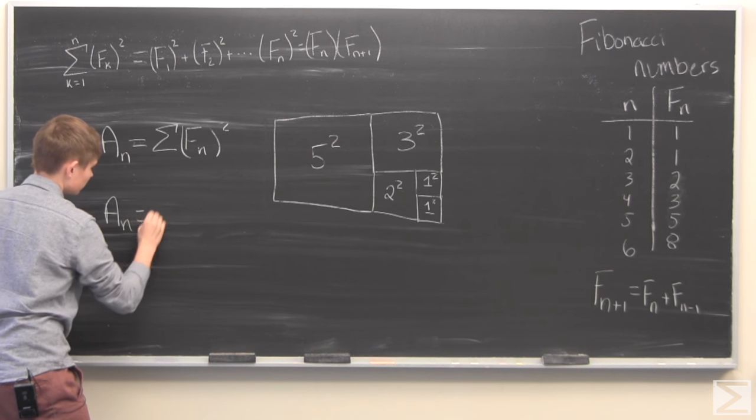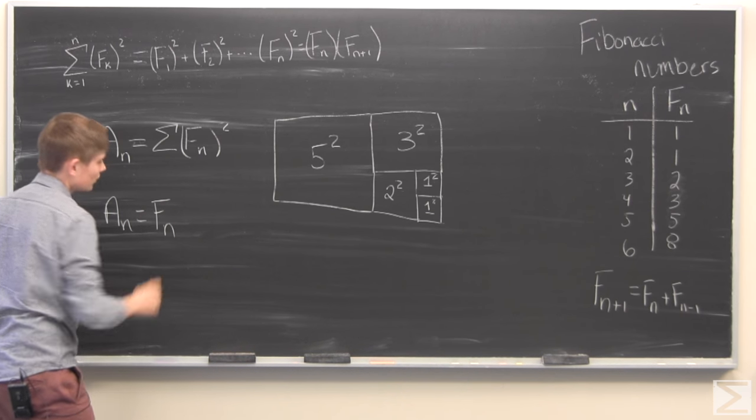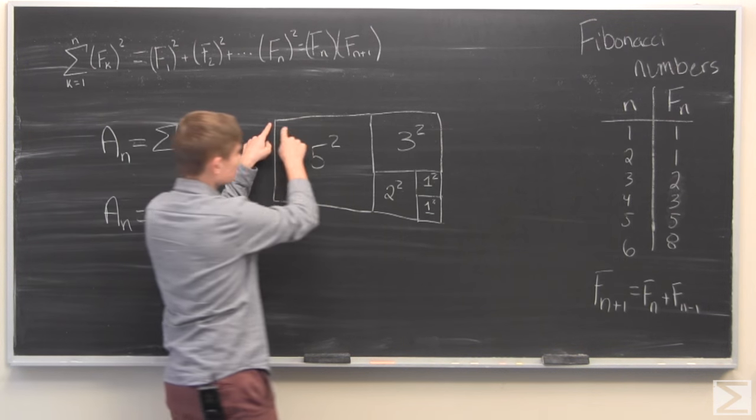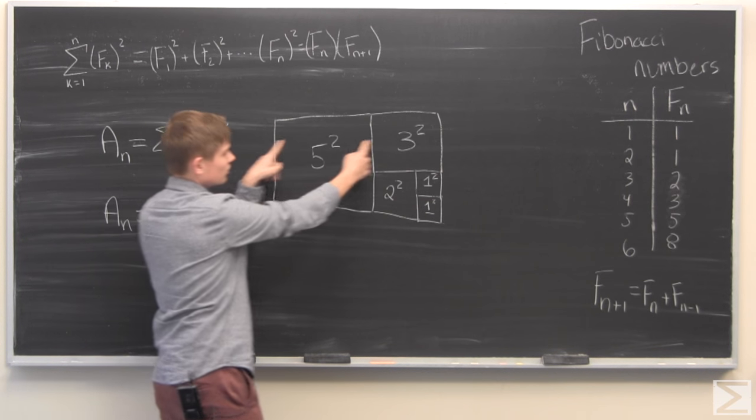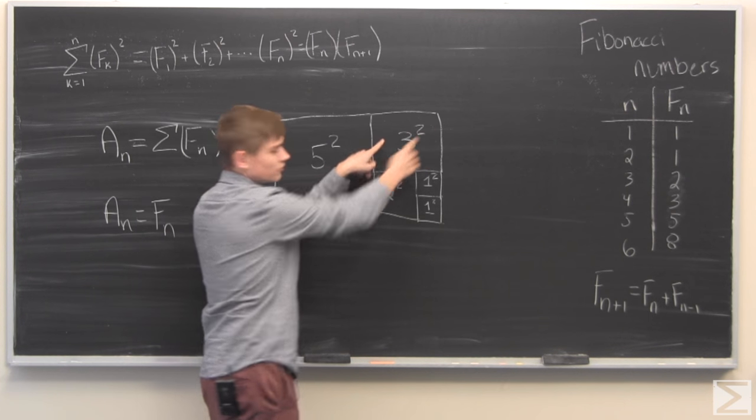So we also have, and this top part right here is the nth Fibonacci number plus the n minus 1th Fibonacci number.